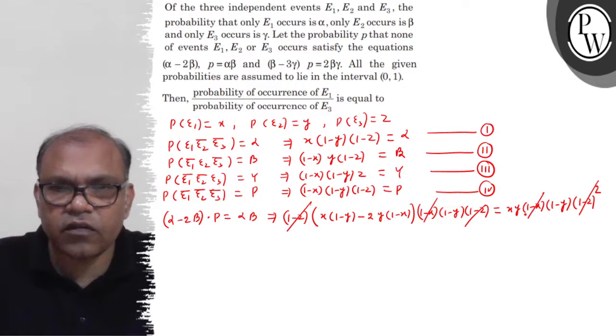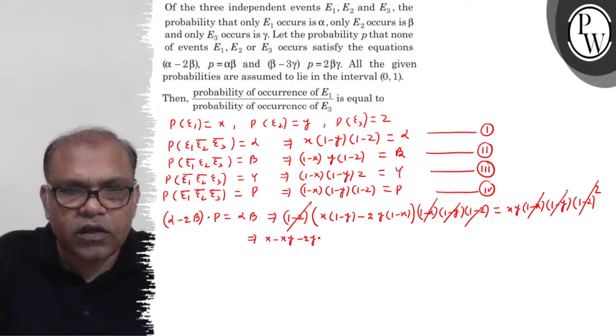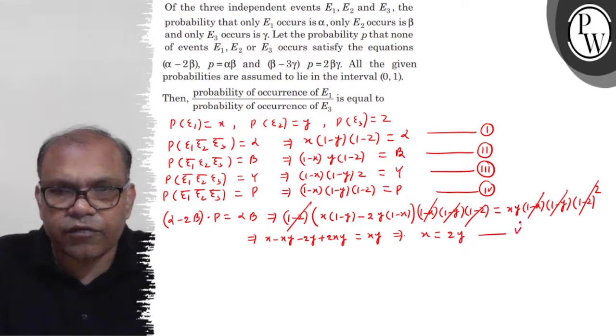(1 minus X), (1 minus X) ke saath cancel. (1 minus Y), (1 minus Y) ke saath cancel. To dekho, aapko yah result mila. This is X minus XY minus 2Y plus 2XY. This equals XY. Ab dekho, yah sab simplify hoke, aisa aa jaye ga. X equals 2Y. Isko aap lijiye, fifth.